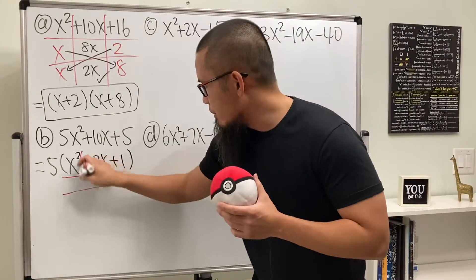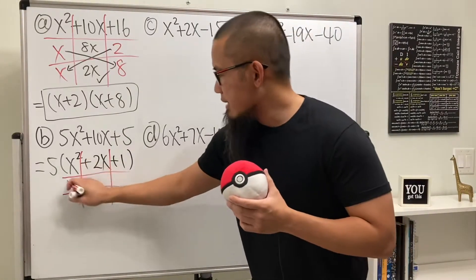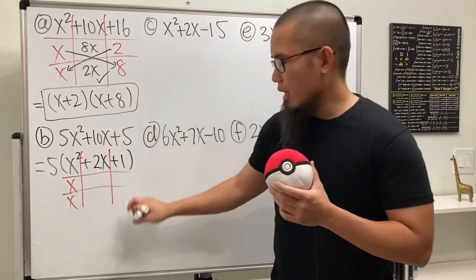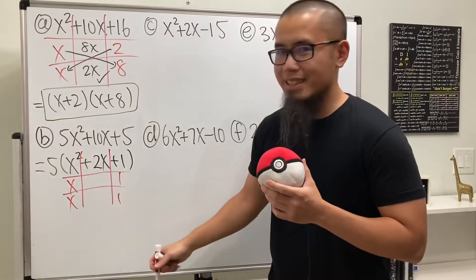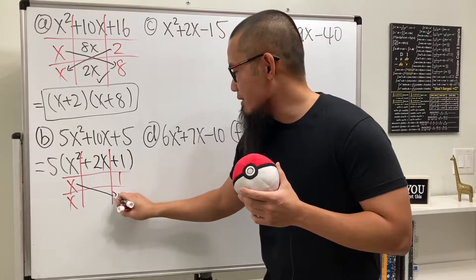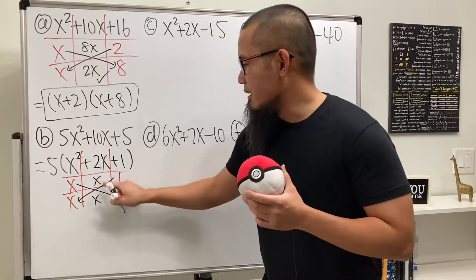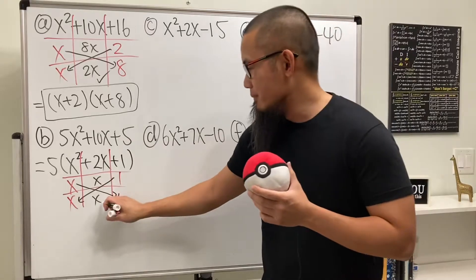And do the tic-tac-toe here. Go ahead, do the tic-tac-toe. x times x gives us x squared, and 1 times 1 gives us 1. And you see, x times 1 is x, and then 1 times x is x. Together we do get the 2x. Good.